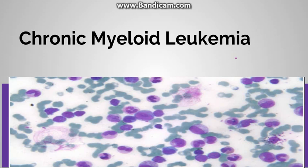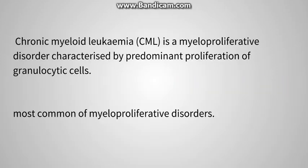What is CML? CML is a myeloproliferative disorder and is characterized by predominant proliferation of granulocytic cells. We use the word 'predominant' because CML is a stem cell disorder — it can involve any hematopoietic stem cell line — but predominantly it affects the granulocytic cell line. It is the most common of all the myeloproliferative disorders.